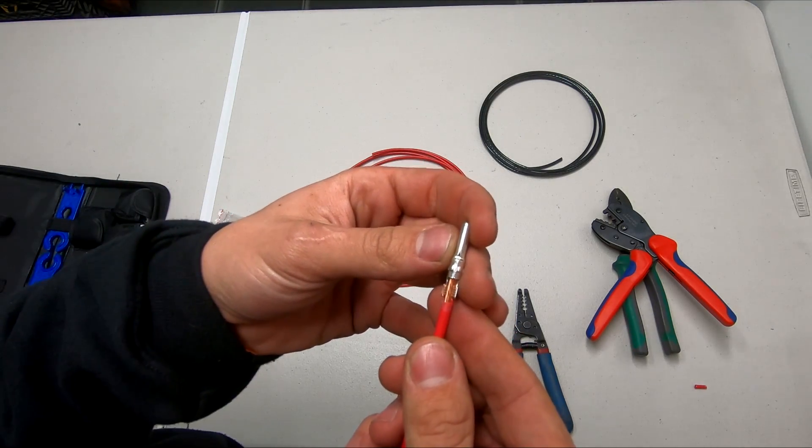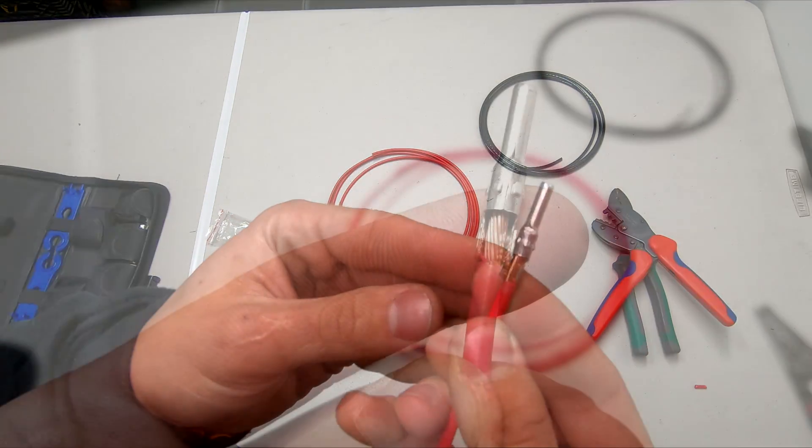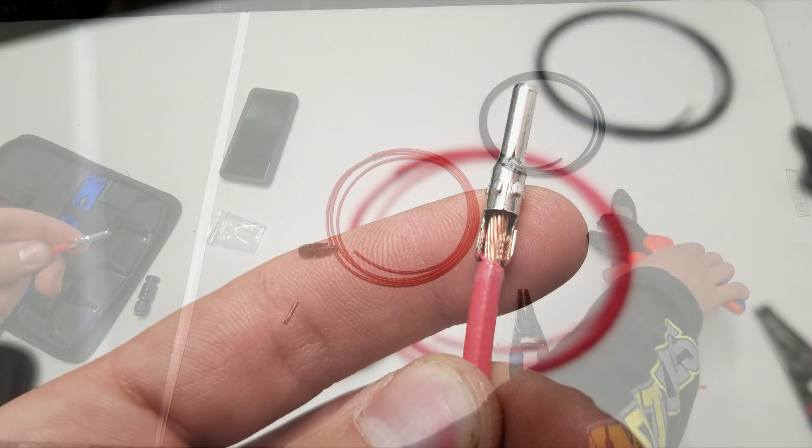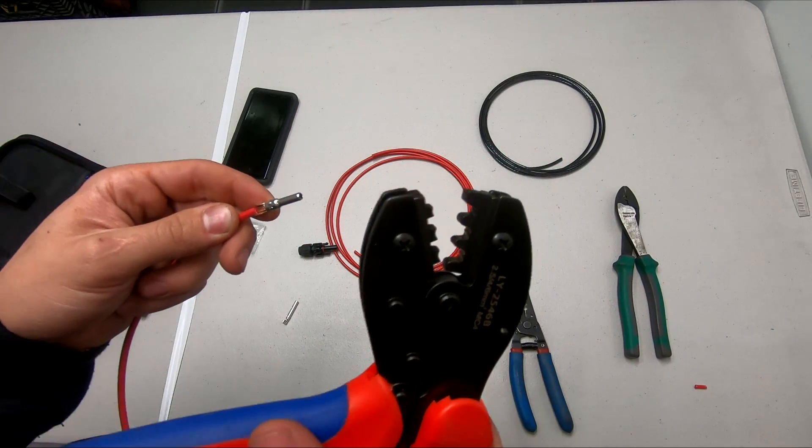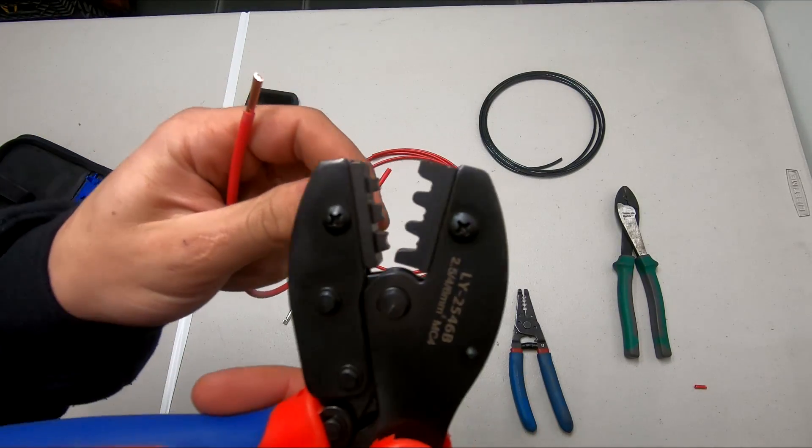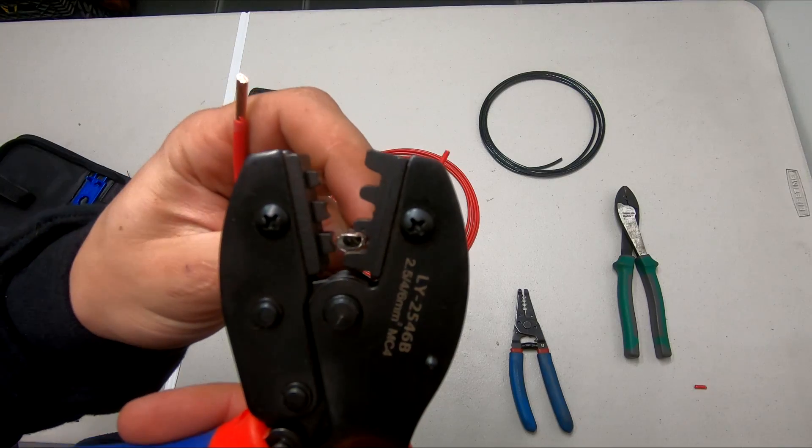You're going to take this ferrule and stick the wire in it like that. Here is a nice still close-up of what that looks like and you're going to want to take this and stick it in the tool.